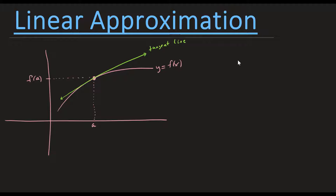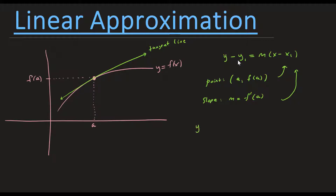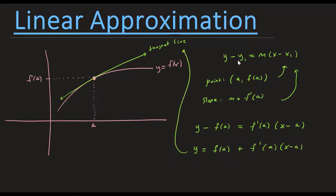We're going to write out the equation of the tangent line. In point-slope form, you have y minus y1 equals m times x minus x1. Here, x1 and y1 are just points — in this case, the point is a comma f of a. The slope m, which in calculus is the derivative at point a. Plugging those into point-slope form and adding f of a to both sides, you get y equals f of a plus f prime at a times x minus a. This is the equation of the tangent line that passes through the point a and touches the curve at a.